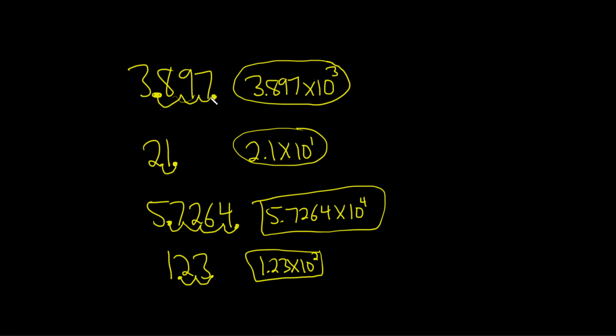So again, you just count. So in the first case, we went left three times, so it's 10 cubed. Left one time, 10 to the 1. Left four times, 10 to the 4. Left two times, 10 squared. I hope this video has been helpful. Good luck.